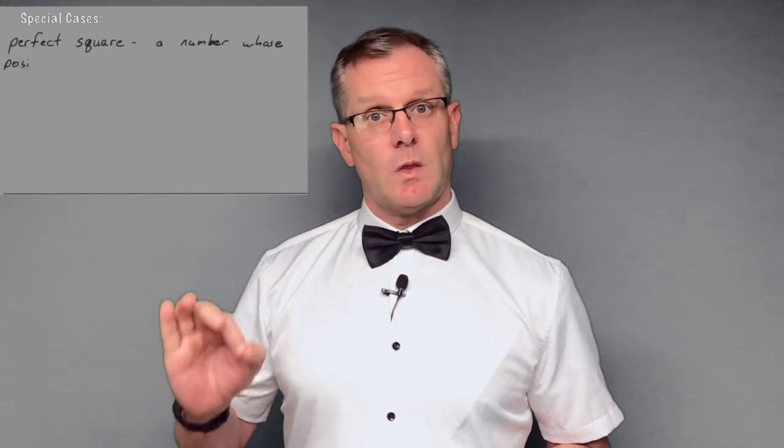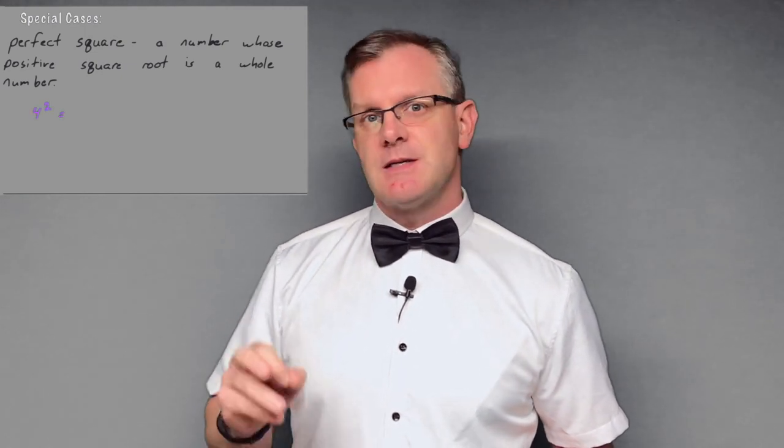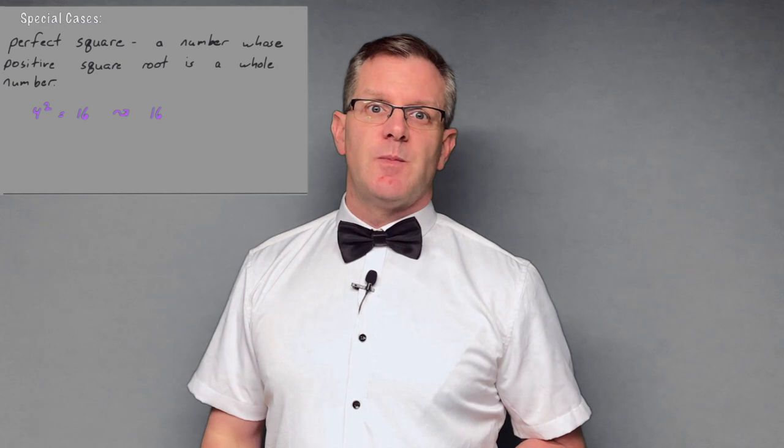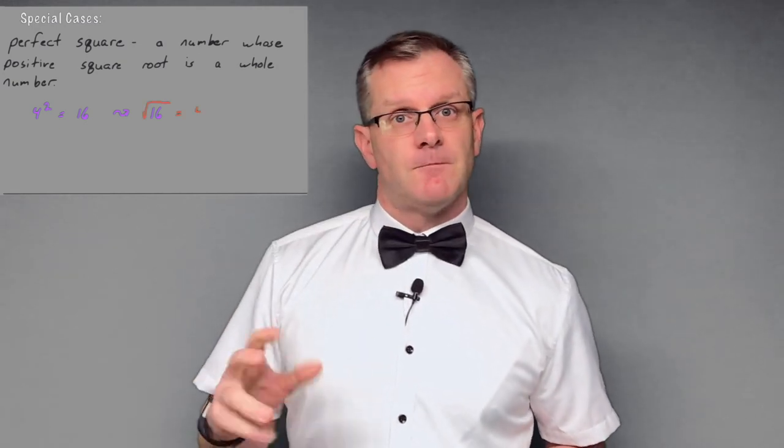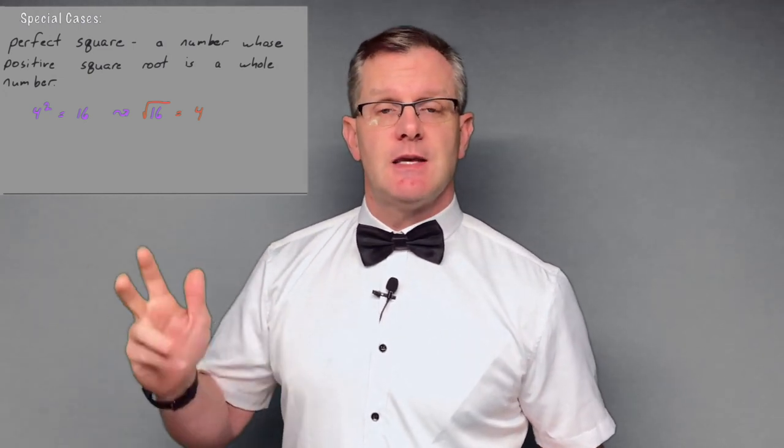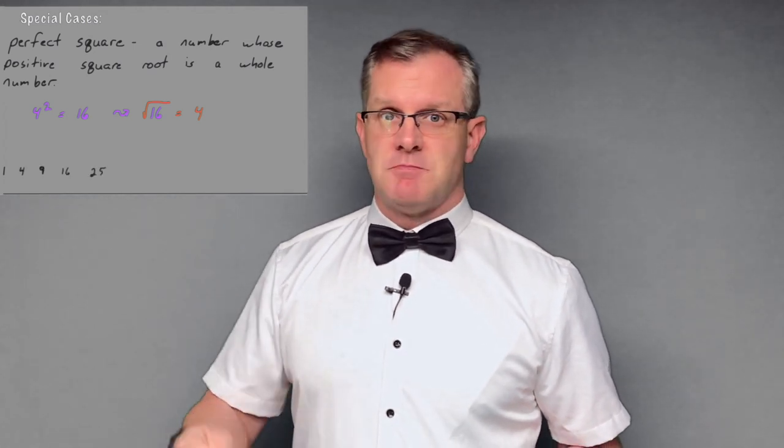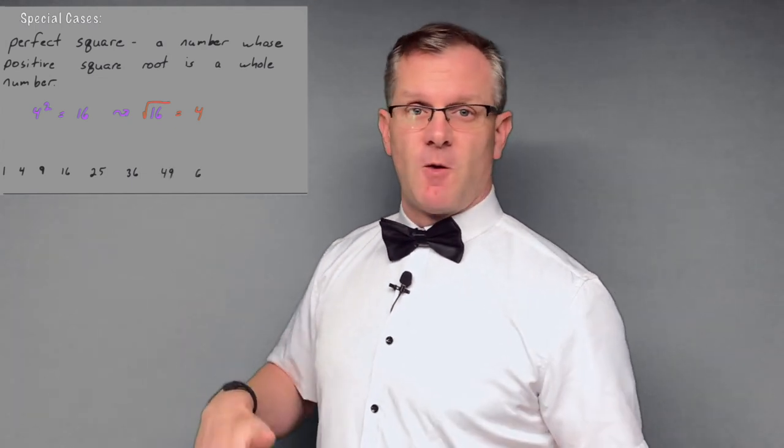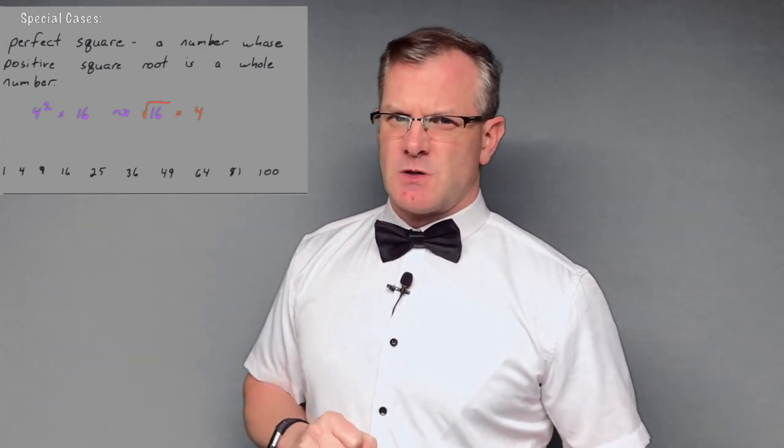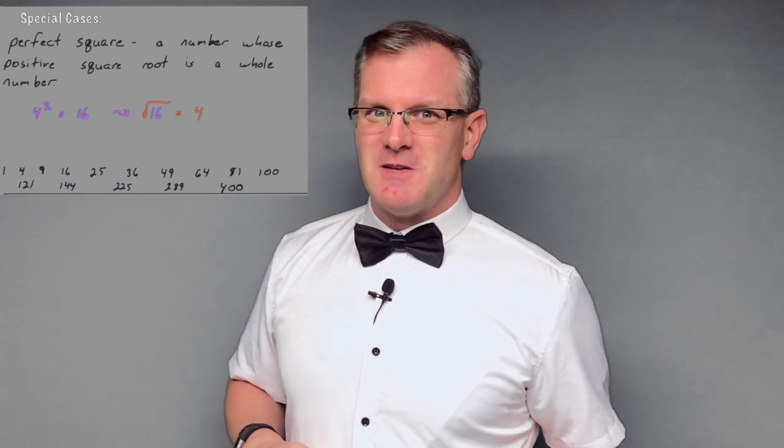Our first thing is we need to make sure that we understand what a perfect square is. A perfect square is any number whose positive square root is a whole number. So as an example, 4 squared is 16. 16 is a perfect square because the square root of 16 is 4. Perfect squares you need to keep in mind: 1, 4, 9, 16, 25, 36, 49, 64, 81, 100. Make sure you know those and then a couple of the other important ones like 11 squared, 121. My students all know 17 squared, 289.